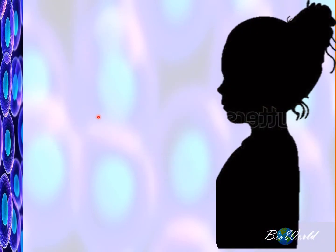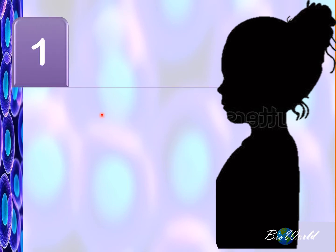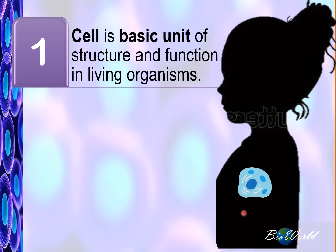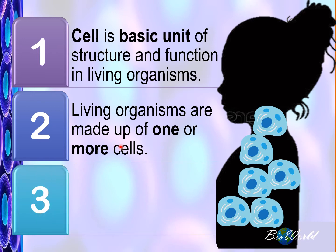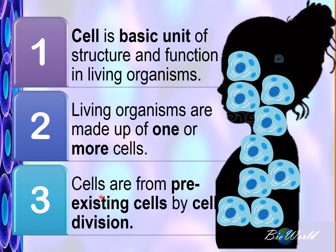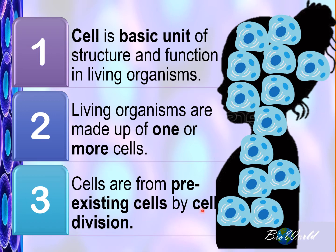These three scientists came up with the original cell theory, which is made up of three parts. The first part states that all living things — both animals and plants — have cells as their basic unit of structure and function. The second part states that living organisms can be made up of one or more cells, today called unicellular and multicellular organisms. The third part states that all cells originate from pre-existing cells through the process of cell division, which today we call mitosis.